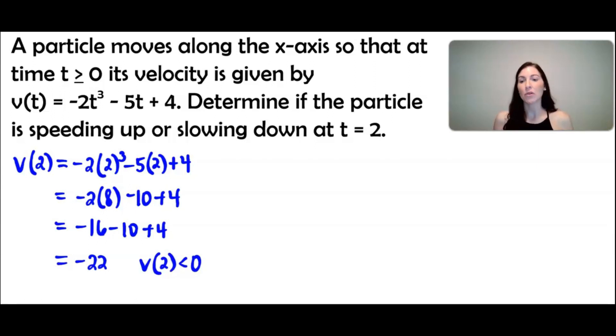So what does that mean in terms of the particle direction? When the velocity is less than 0 or negative, that means the particle is moving to the left. The next thing we have to figure out is the acceleration at a value of 2.